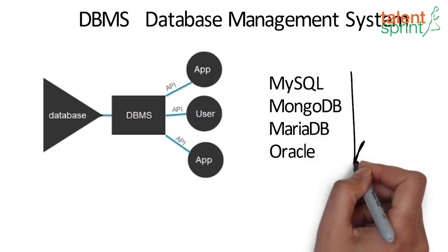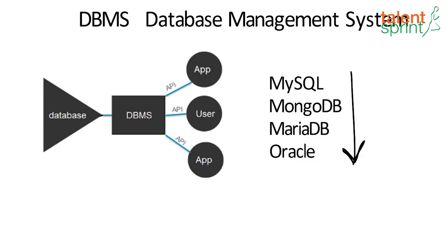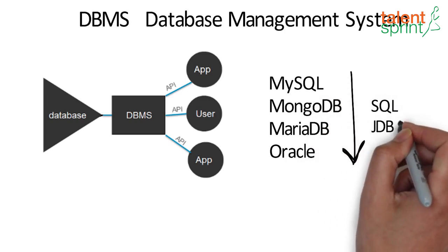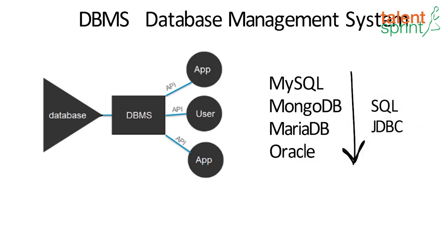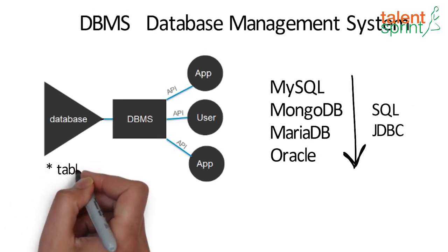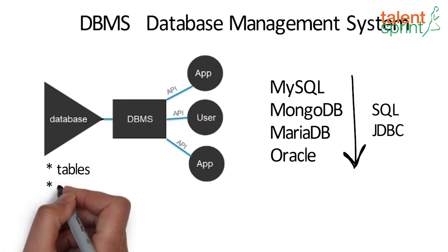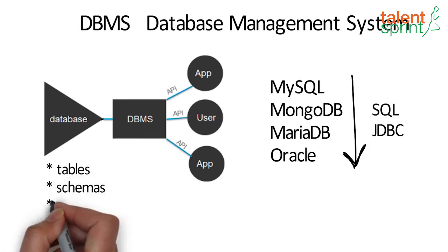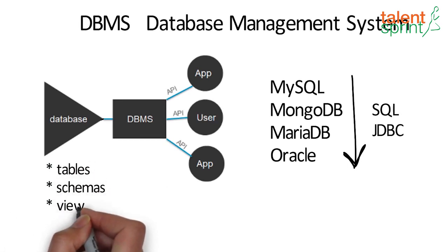All these different DBMS can interoperate by using standards such as SQL or JDBC, to allow a single application to work with more than one DBMS. A database further consists of multiple things like tables, schemas, views, etc., which we'll understand one by one.